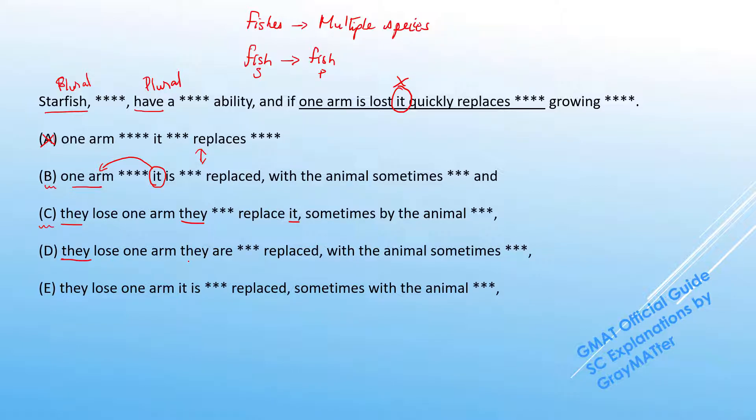D says they lose one arm, they are replaced. Now this is just similar to the passive construction in B, but here instead of it, we have they which is plural, but the arm is singular. So that is a clear mismatch in number. D goes off.